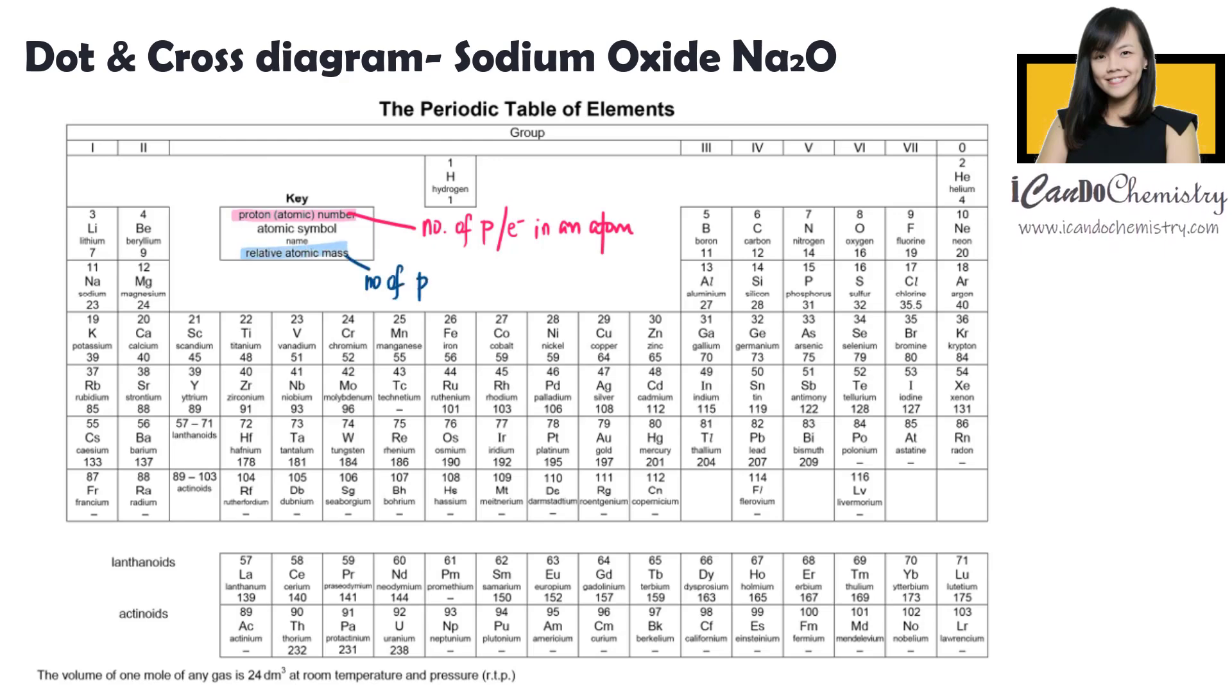Now the number at the bottom tells us the number of protons and neutrons each atom has.